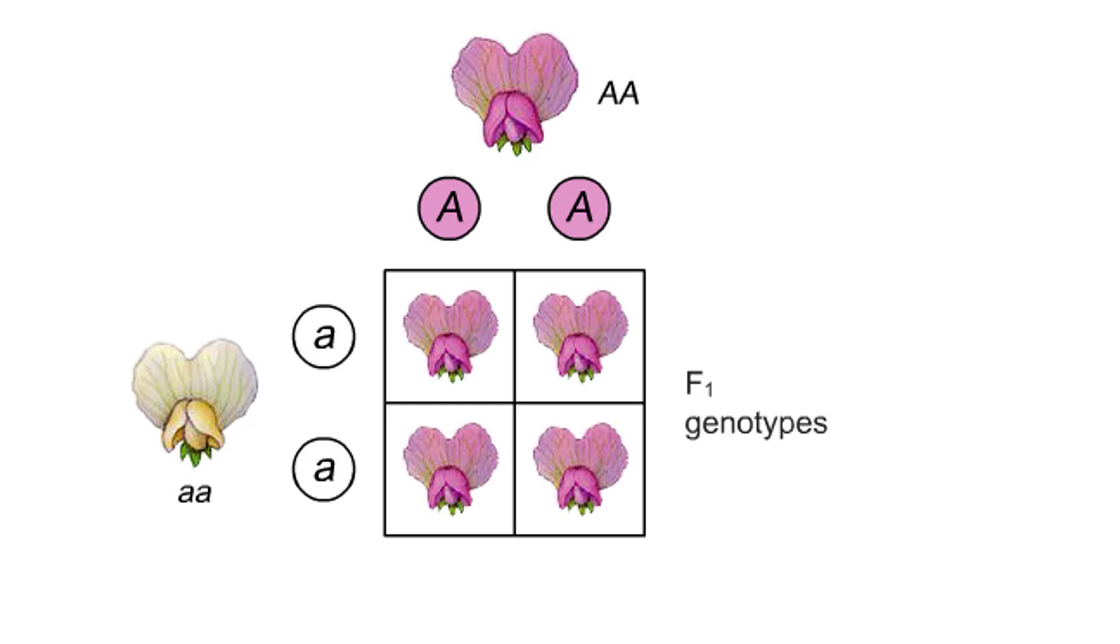And these are the F1 phenotypes. In all offspring, the dominant allele will mask the recessive allele, and the offspring will be purple.